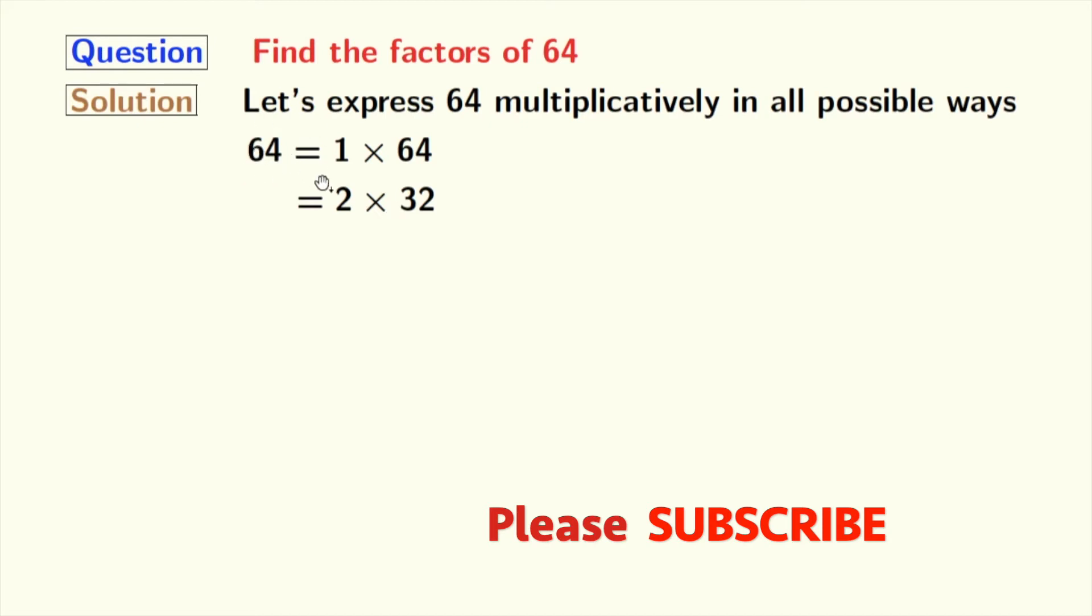Next number 3 does not divide 64. Next comes 4, and it divides this number. We get 4 times 16 is equal to 64. Next numbers 5, 6, and 7 do not divide 64. So, we will try for 8, and we see that 8 times 8 gives us 64.